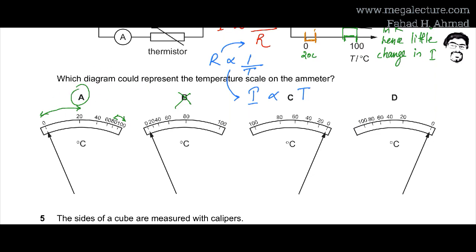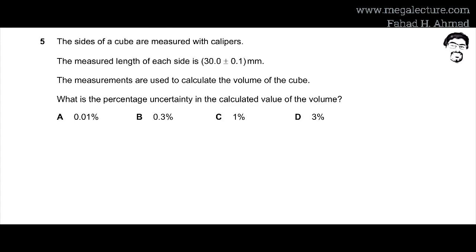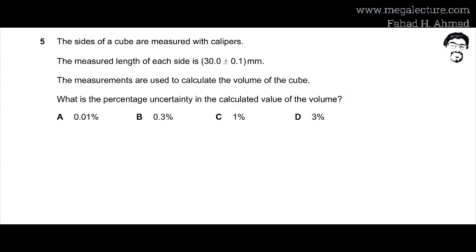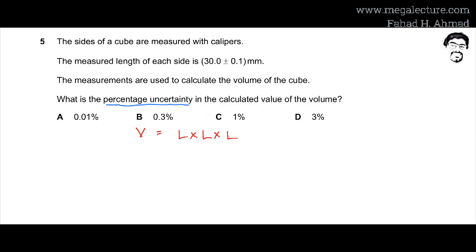MCQ number 5: the sides of a cube are measured with callipers, giving a length of 30 ± 0.1 mm for each side. We need to find the percentage uncertainty in the calculated volume. Volume = length³ = L × L × L, and all lengths are 30 ± 0.1 mm.